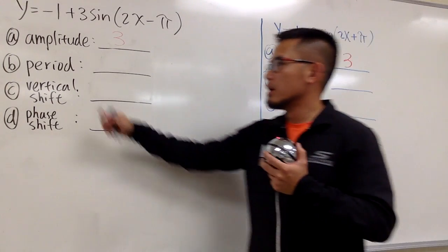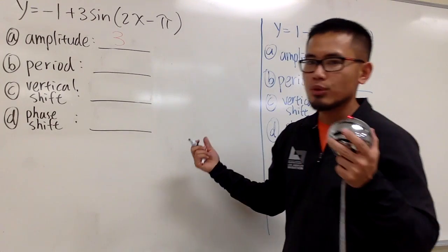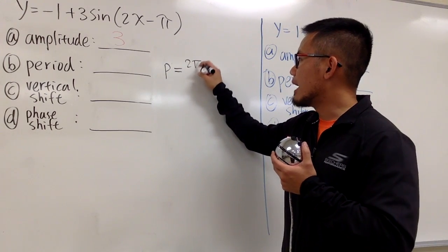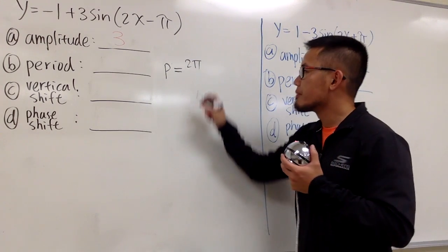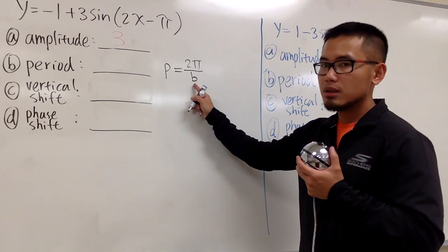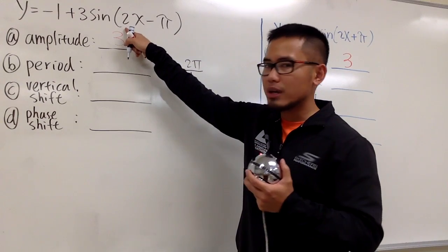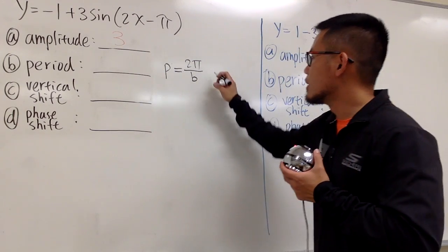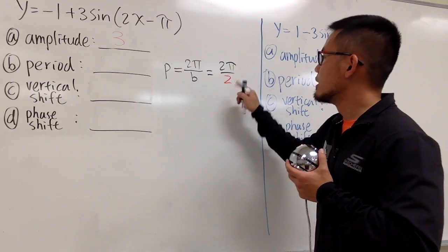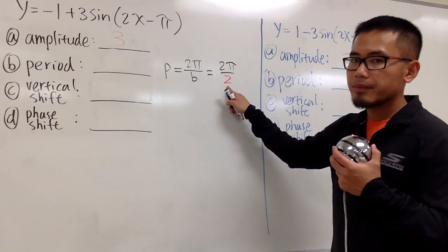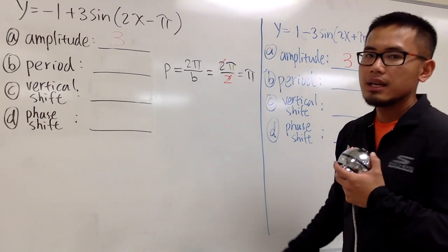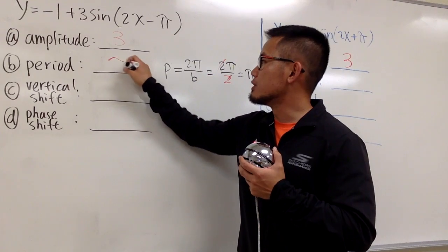Next, we are going to find the period. We need to know the formula: P equals 2π divided by the b value. So what is b? b is just the number in front of the x. In our case, it is 2. So this is just going to be 2π over 2. The 2s cancel, so we end up with π. The period is just π.